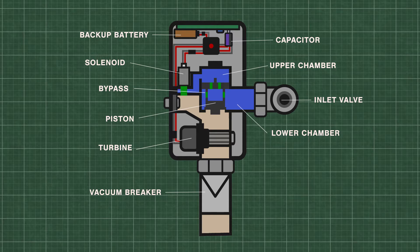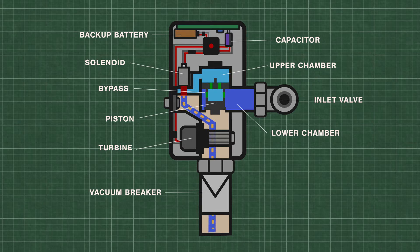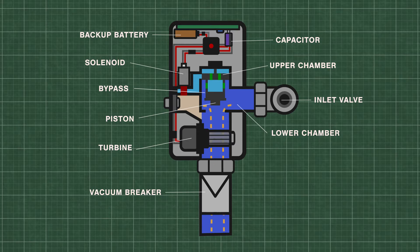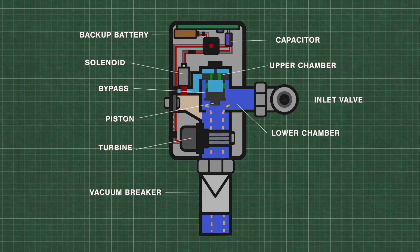When the sensor is triggered, the solenoid activates and releases water from the upper chamber, which decreases the pressure. High pressure water from the inlet now lifts the piston up and travels down the flush pipe. As water flows through the microturbine, electric power is generated and stored in the capacitor, which is then used to power the system.